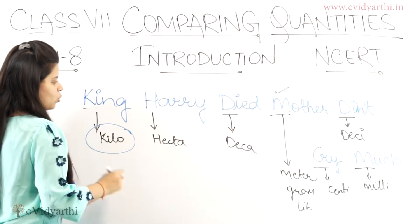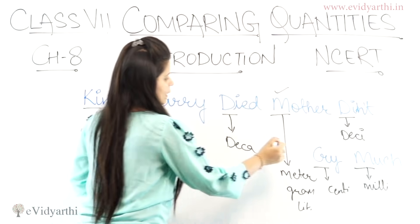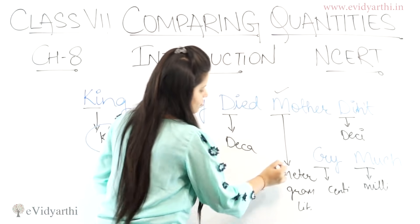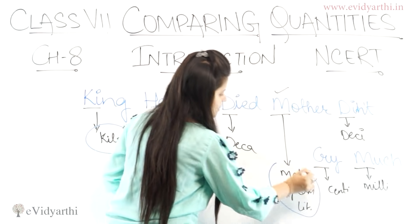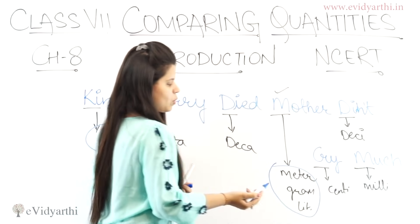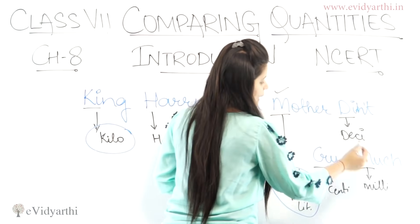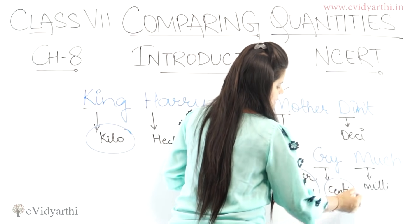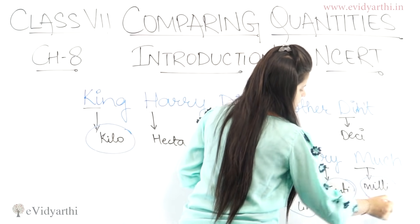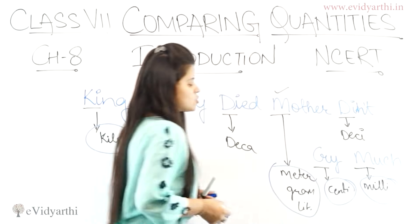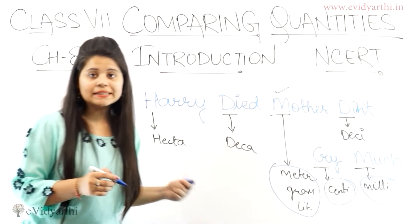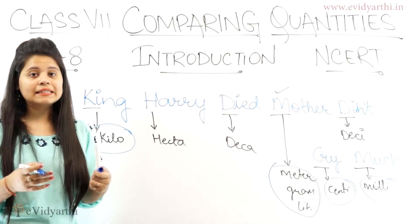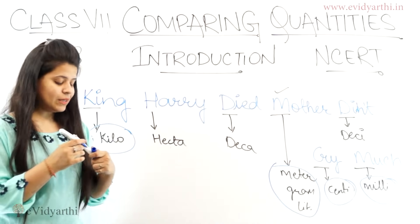The most commonly repeated units are: kilo, then meter, gram, liter — these are very basic. Then centimeter, millimeter. The ones I have circled are those that repeat most often. After kilo, these are the ones you need to remember.